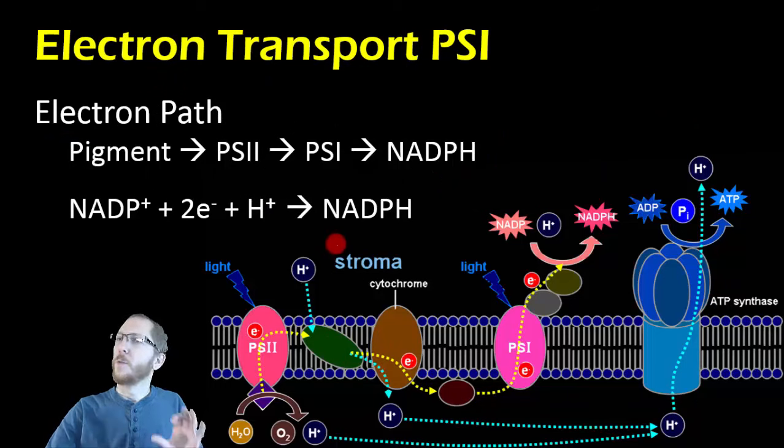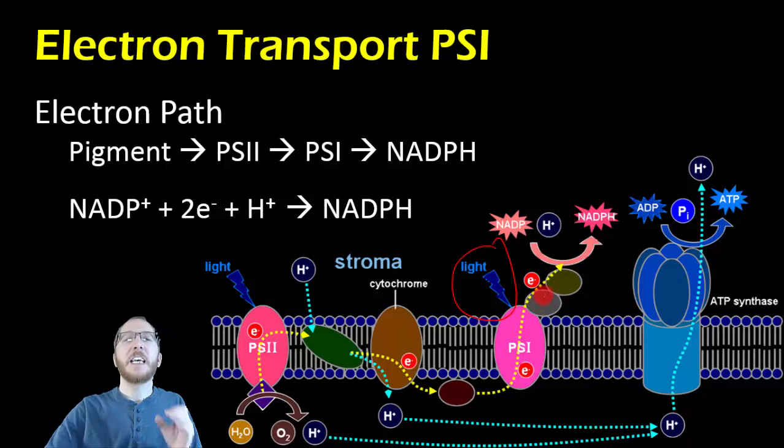So now we've got the last part of the light reactions, photosystem 1. Once again I know it's the second part, but it's still named photosystem 1. And in photosystem 1 we're going to do the same general process where we're going to have an electron that's on a pigment molecule get excited by light. It's then going to be donated into this photosystem, except this photosystem is not going to make ATP.